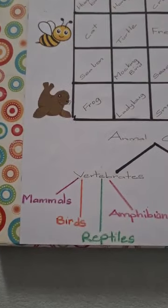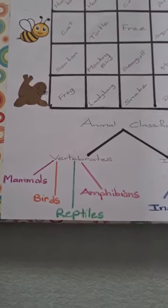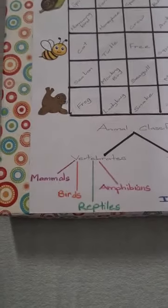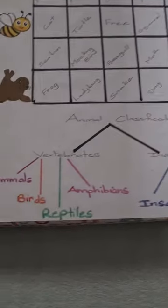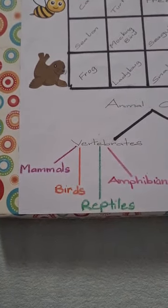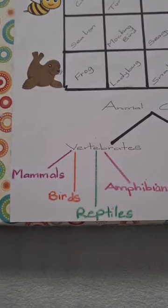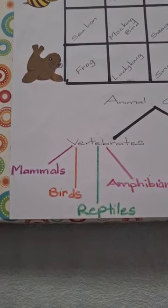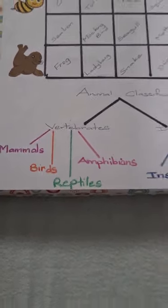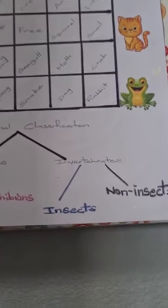and invertebrates. As you can see here, the animal classification at the bottom — this here would help you to play the game. Now here we have vertebrates. Vertebrates are classified as mammals, birds, reptiles, amphibians, insects,